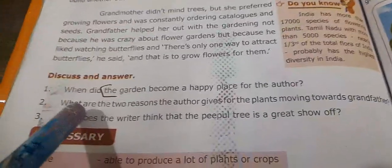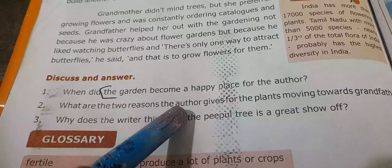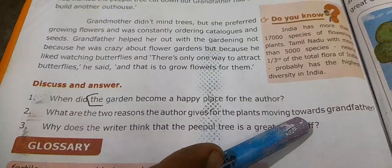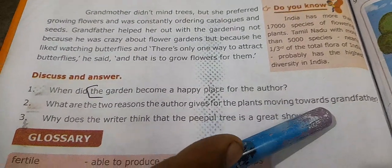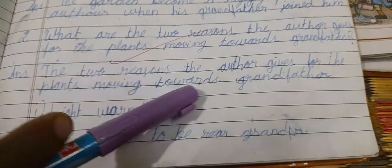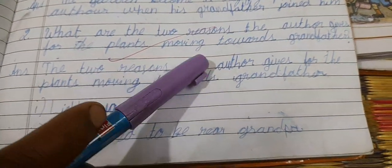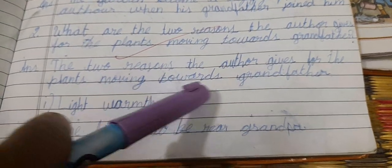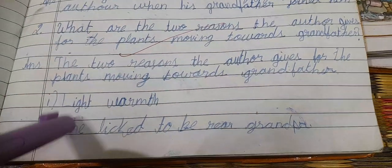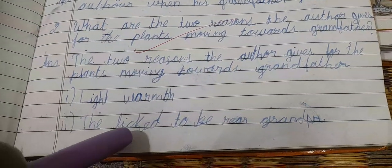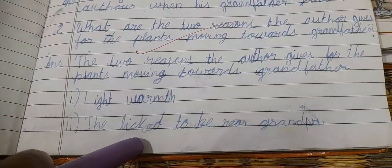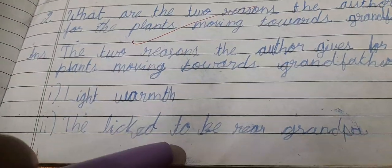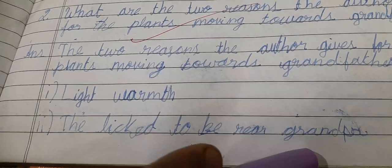Second Question: What are the two reasons the author gives for the plants moving towards grandfather? The two reasons the author gives for the plants moving towards grandfather are light, warmth, and they liked to be near grandpa.